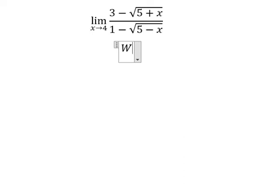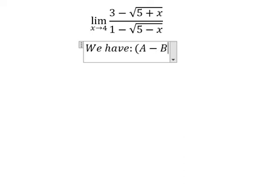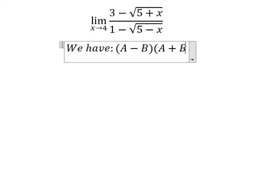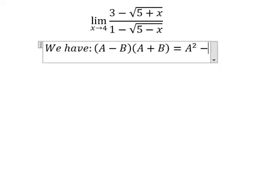We have the formula here: A minus B multiplied by A plus B equals A squared minus B squared.